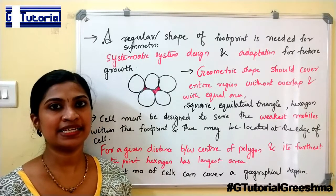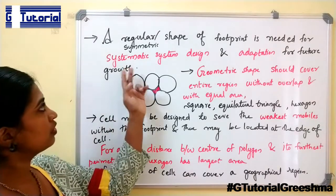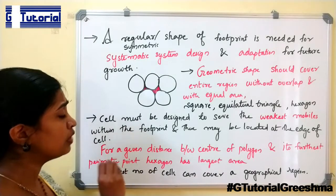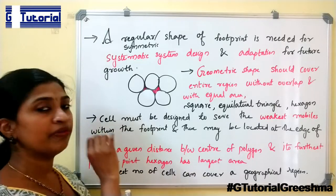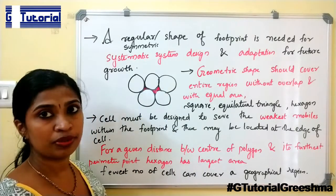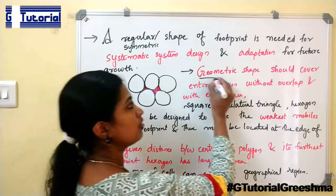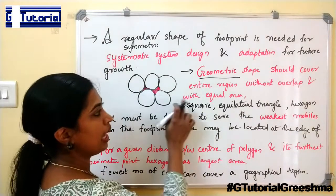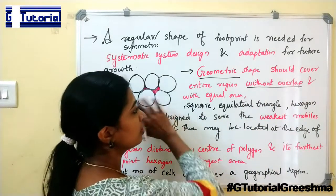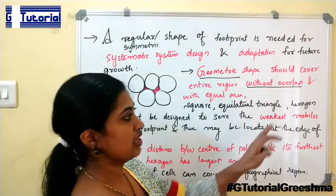Although the real footprint of a cell is irregular in nature, a regular symmetric shape is required for systematic system design and future growth. We cannot use a circle because the area between circles is not covered by any base station. The geometric shape chosen must cover the entire region without overlap and with equal area. The shapes that can be considered for a cell are square, equilateral triangle, and hexagon.